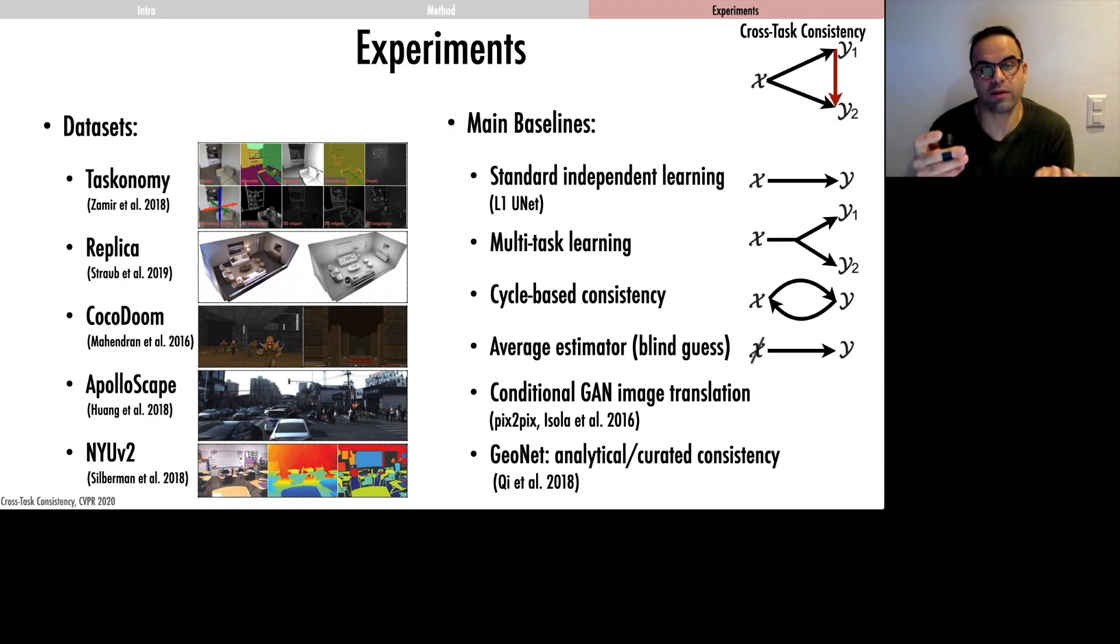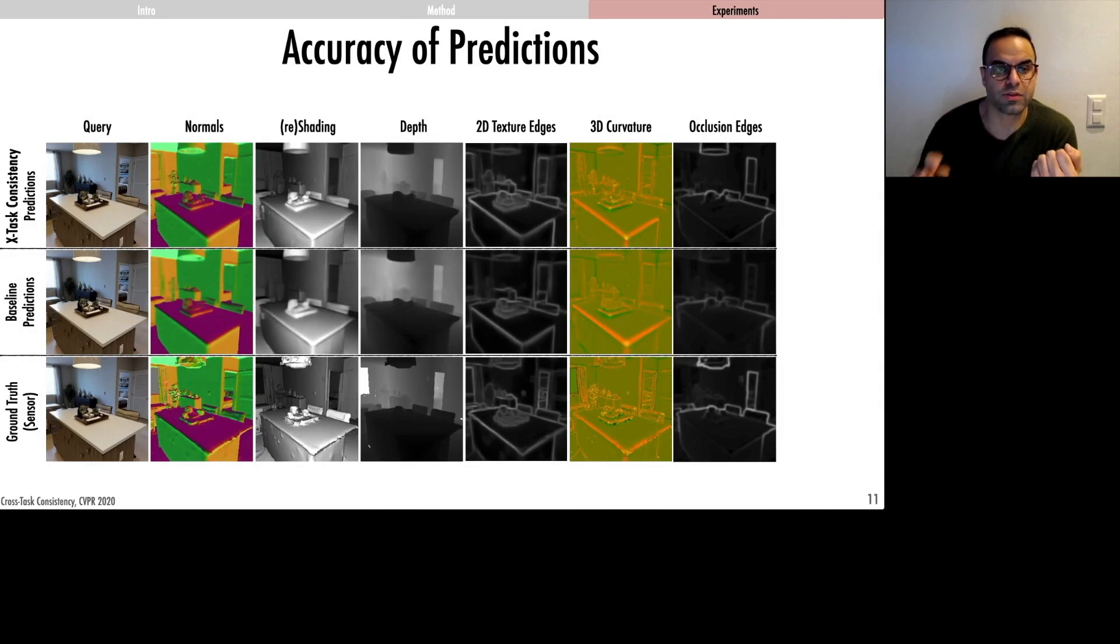Here's a qualitative comparison for several prediction domains. You can see that consistency notably improved the results, especially in the fine-grained details like in the yellow markers.